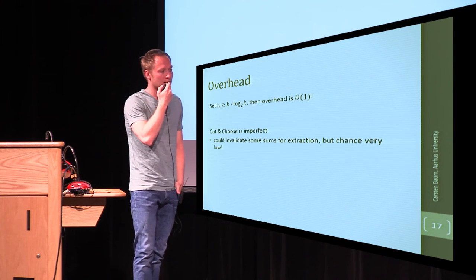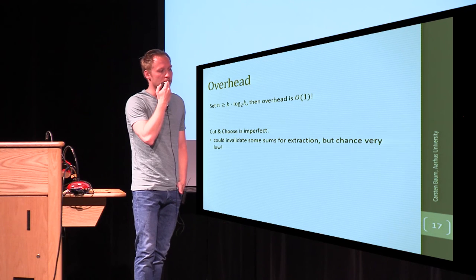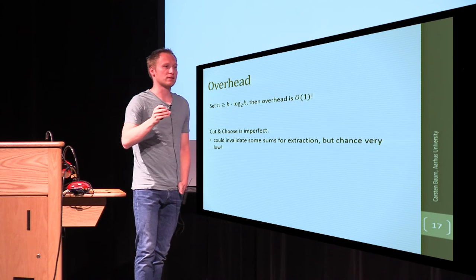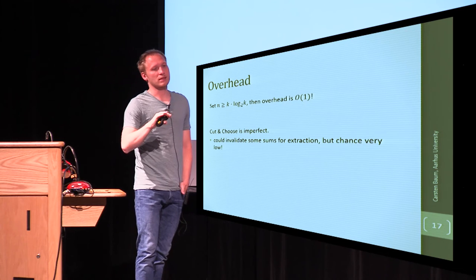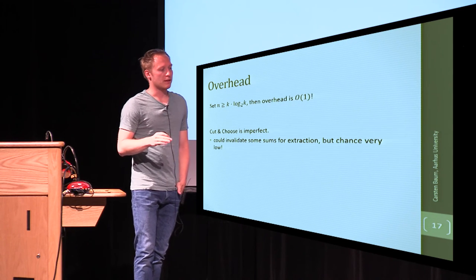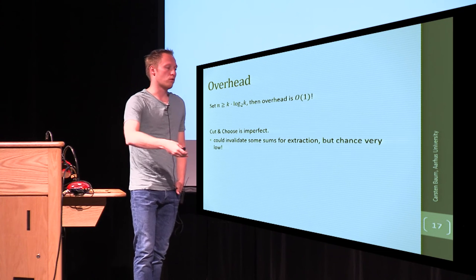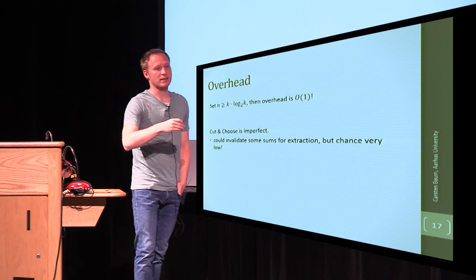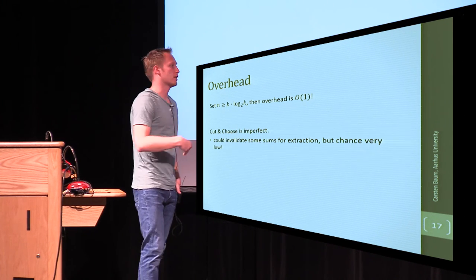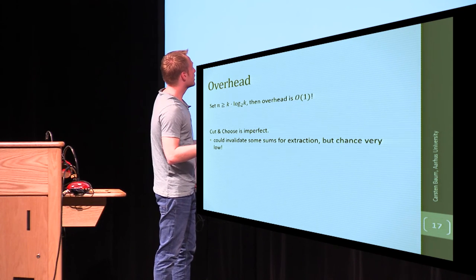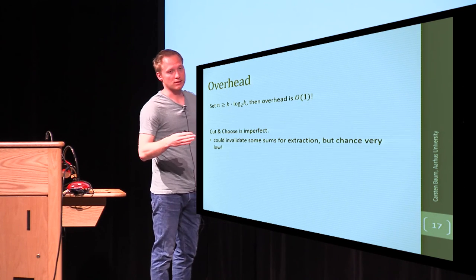So, what about the overhead? If you have, let's say, a constant number of sums, which is, let's say, linear in k, in every round that you play, and you play a logarithmic number of rounds, all in all, you will have k times log k sums you have to prove knowledge of, so we have to choose n to be bigger than k times log k to get overhead that is constant.